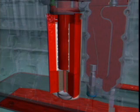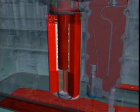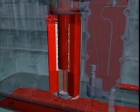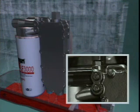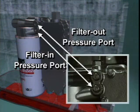During normal engine operation, oil circulates through the full flow section of the combination filter and into the main oil rifle. However, if the full flow section becomes plugged to the point that a 50 PSI pressure difference exists between the filter in and filter out, the bypass valve opens in the oil filter head and routes unfiltered oil to the main oil rifle. To measure the pressure difference across the filter, a filter in pressure port and a filter out pressure port are integral parts of the filter head.